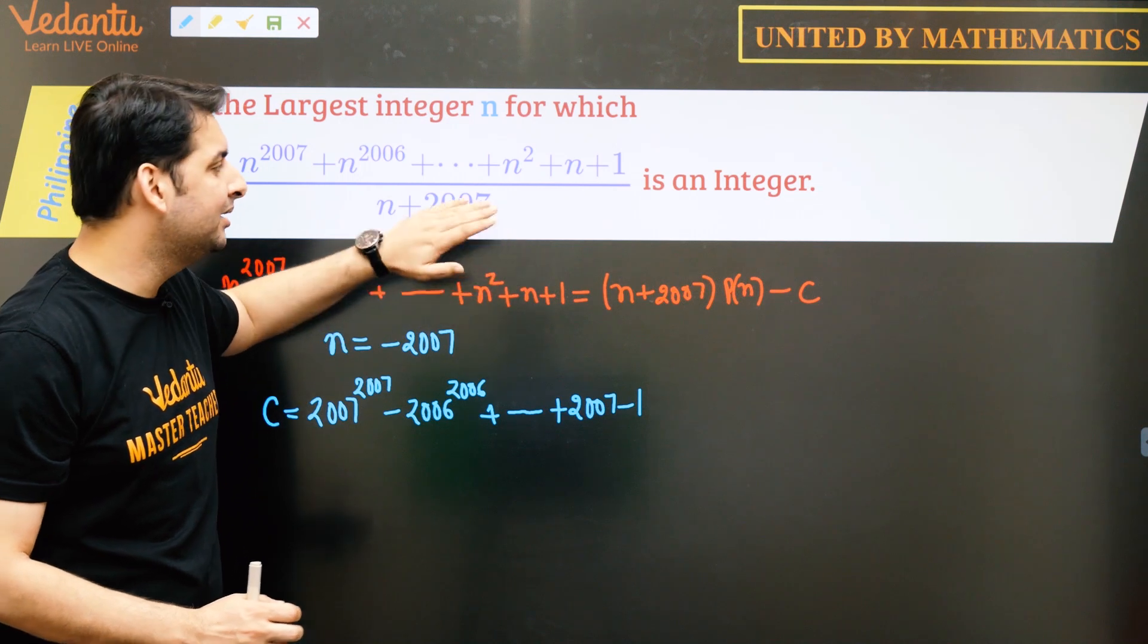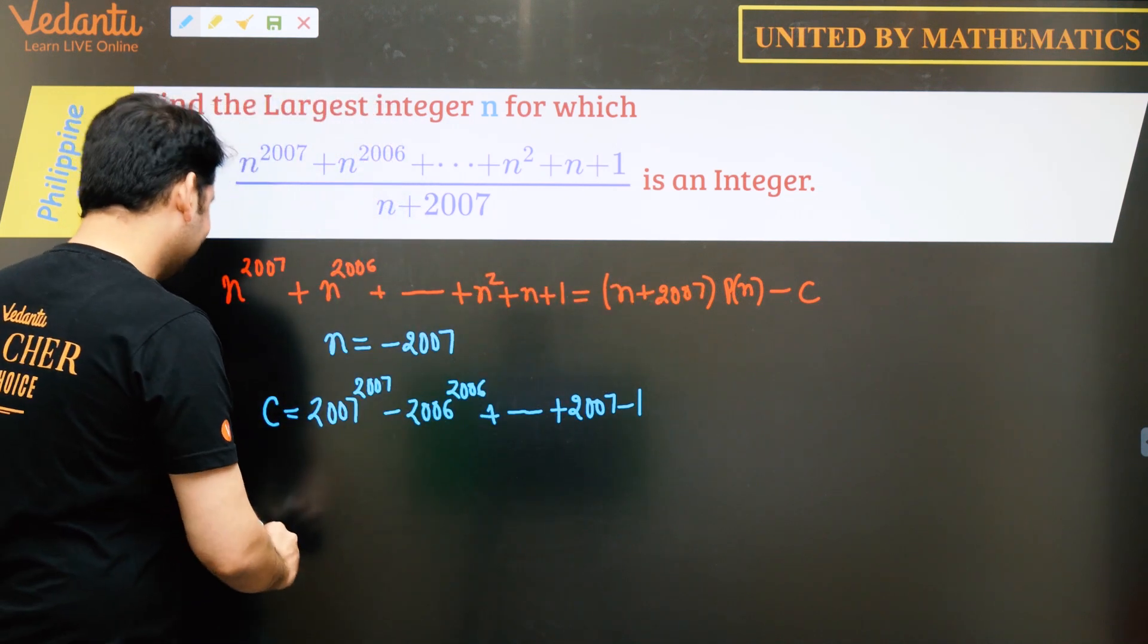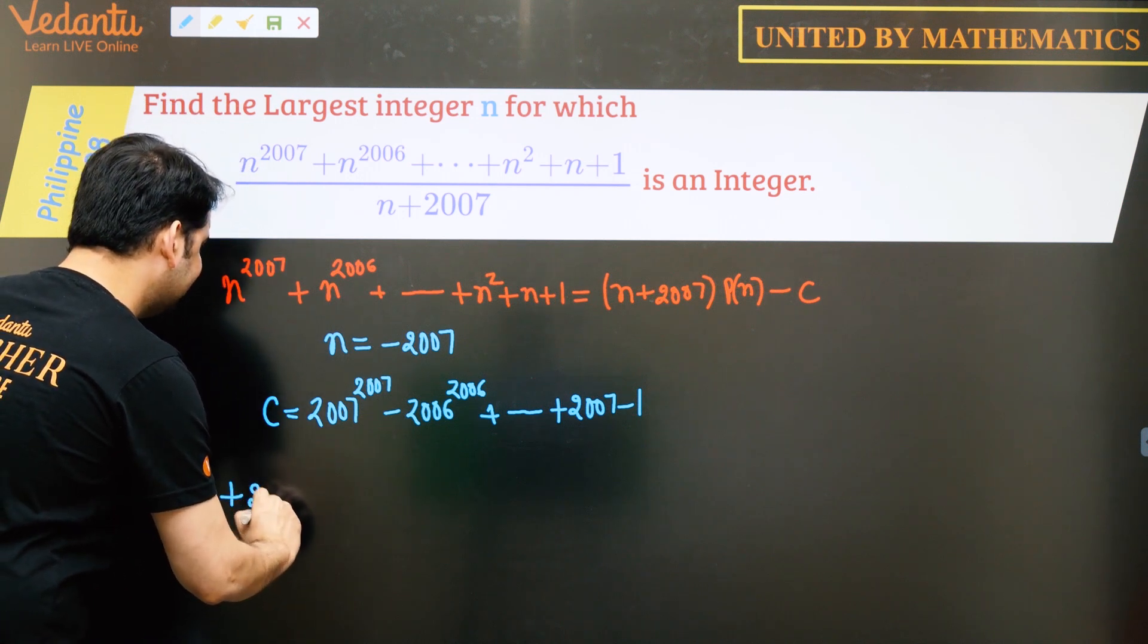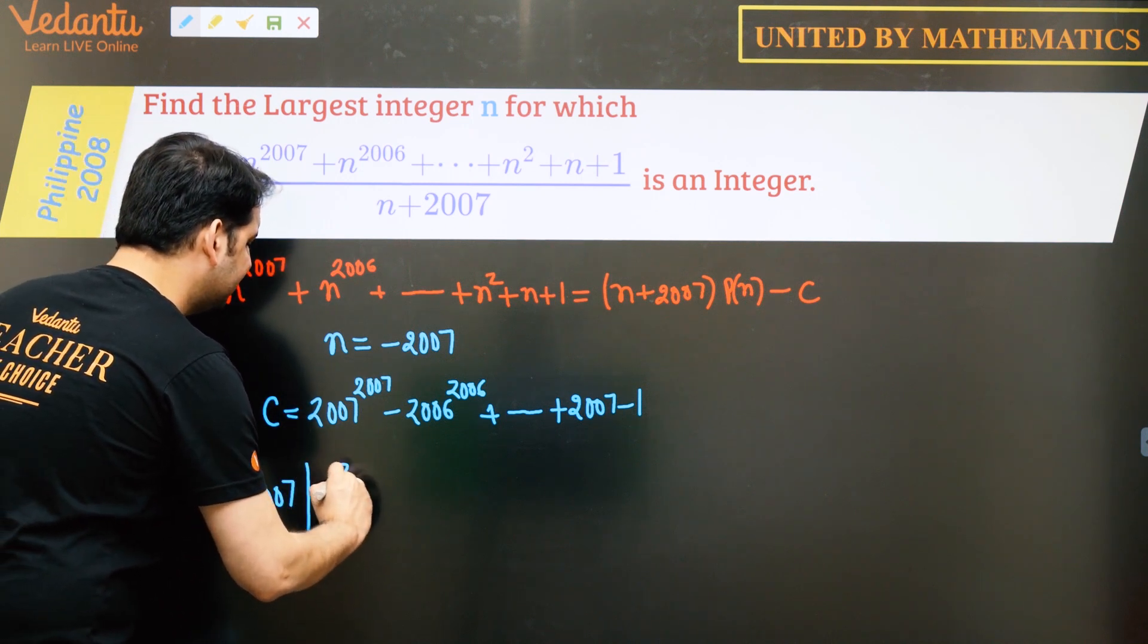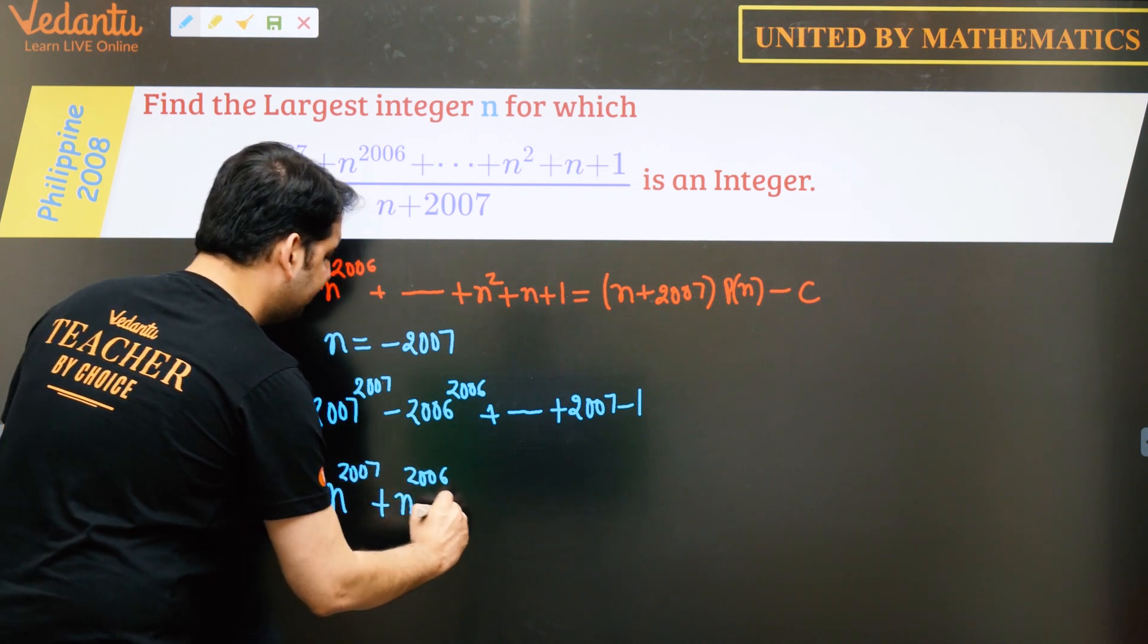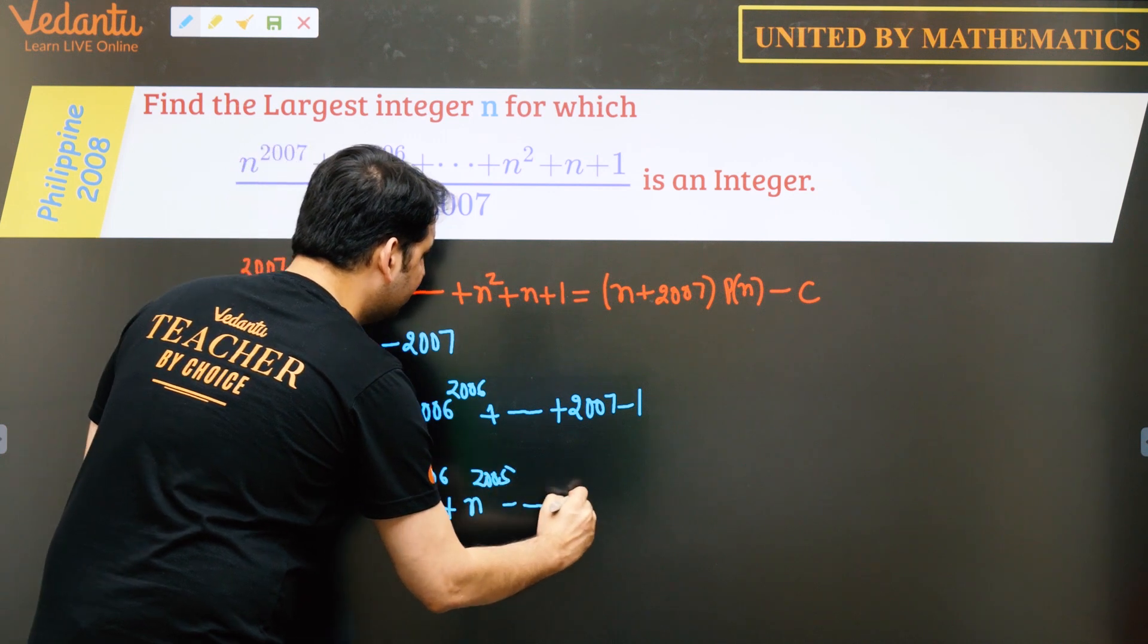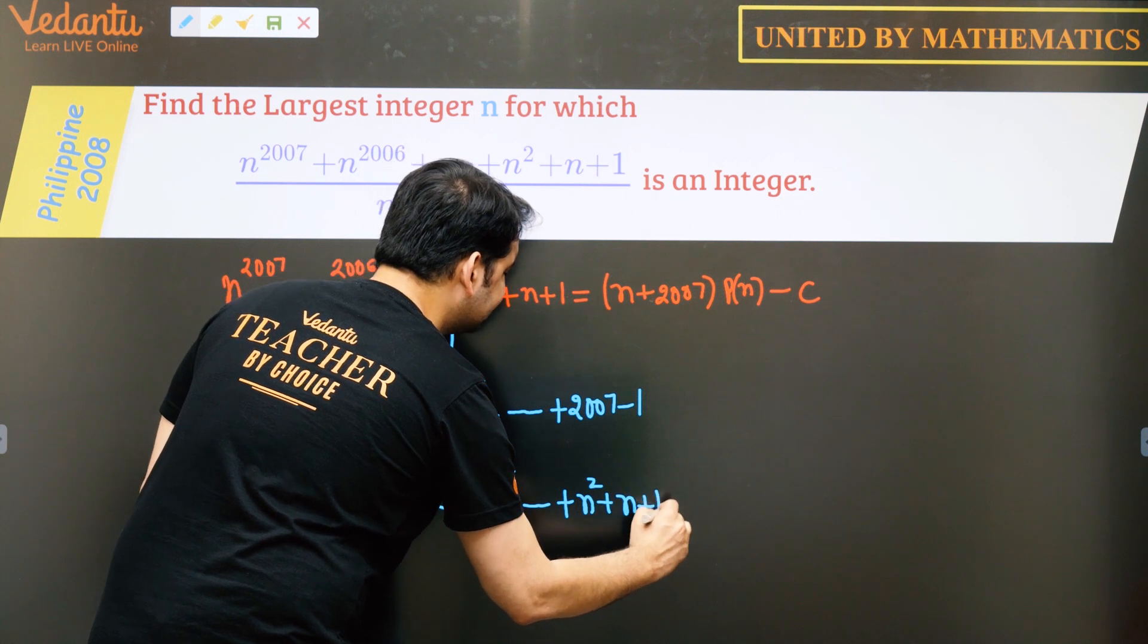this is clearly divisible by n plus 2007. So that means n plus 2007 divides n to the power 2007 plus n to the power 2006 plus n to the power 2005 and it goes till n square plus n plus 1 plus c.